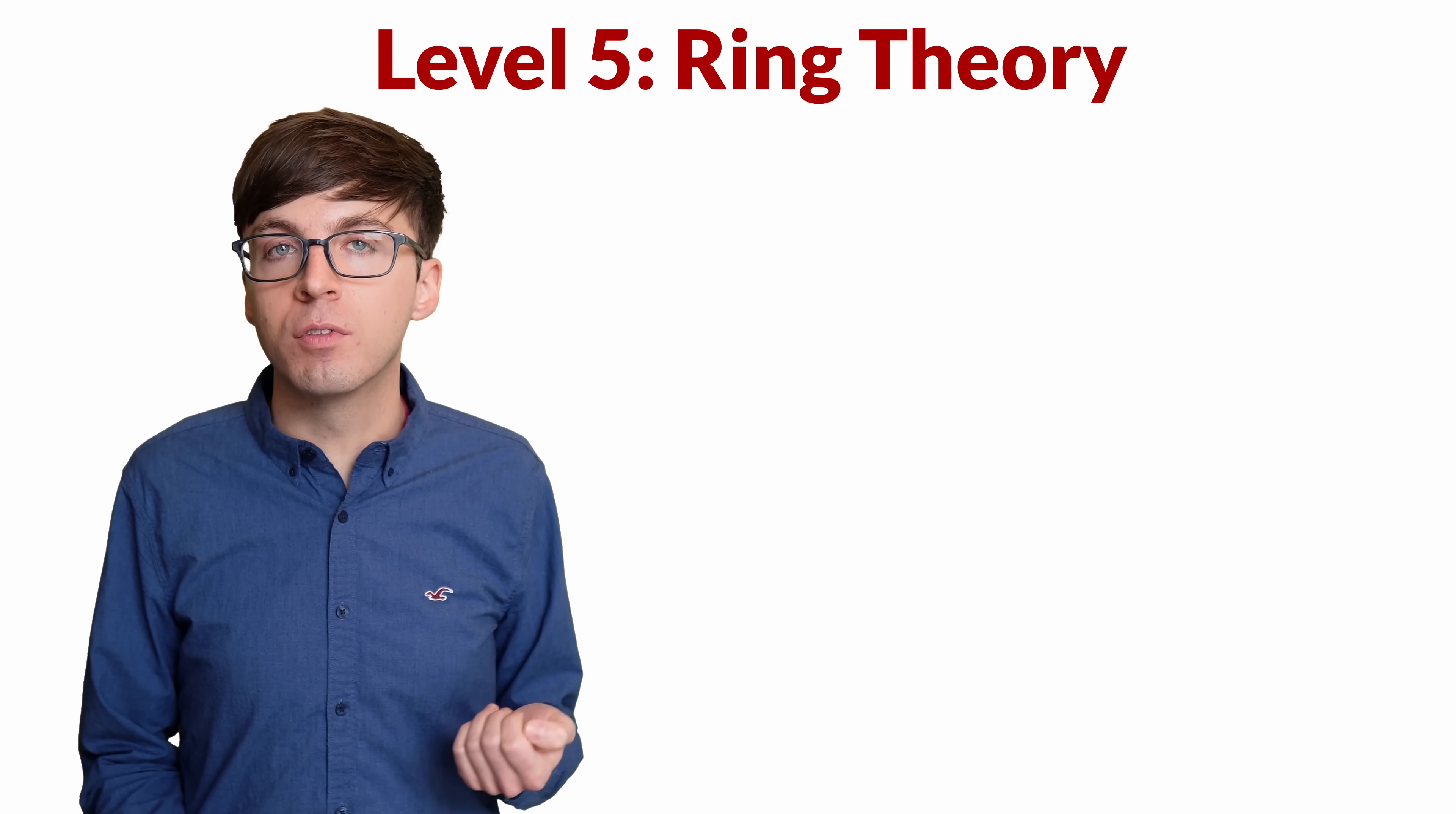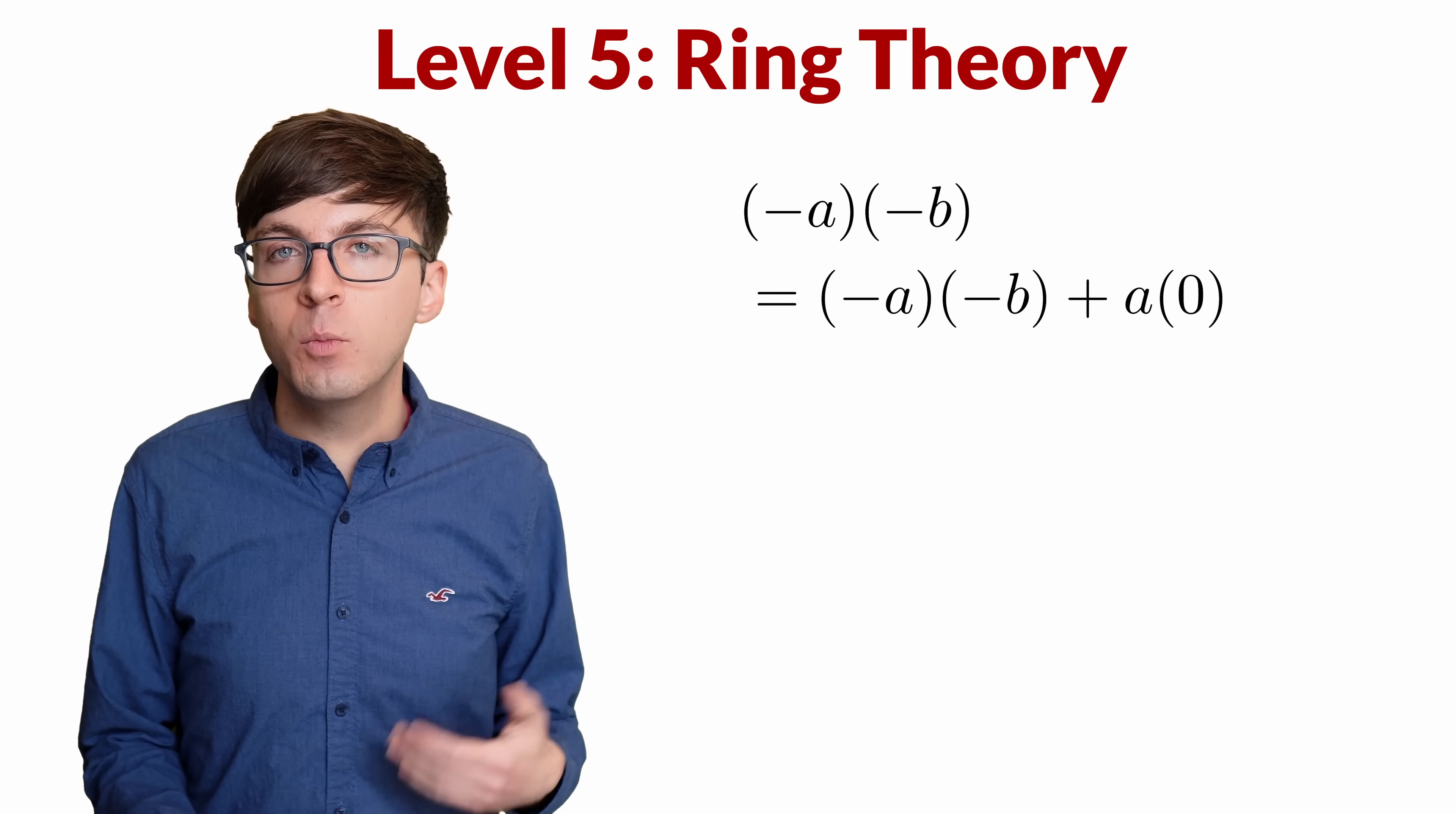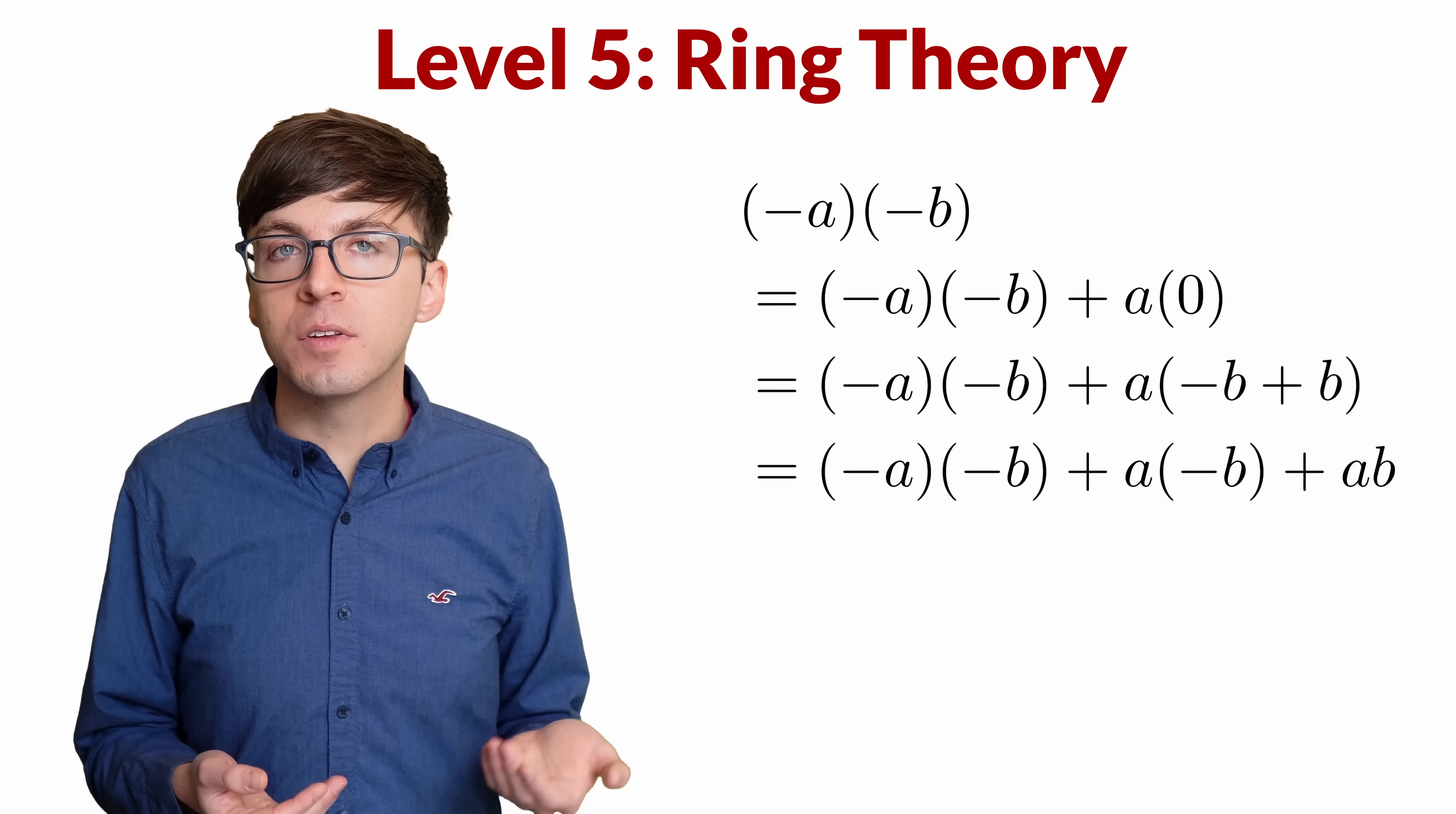Now we're ready to prove the result. Let's start with negative a times negative b, and then add a times 0, which is just adding 0. Then we can write 0 as negative b plus b, and use the distributive property to expand this to negative a times negative b plus a times negative b plus ab.